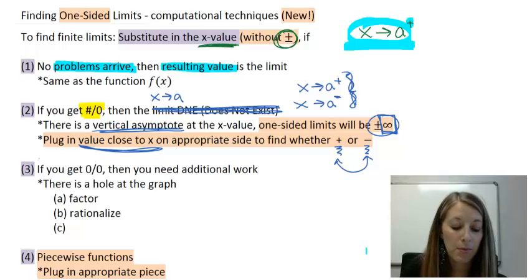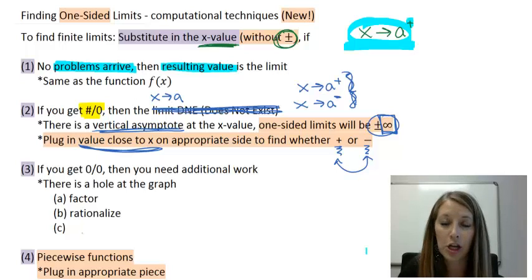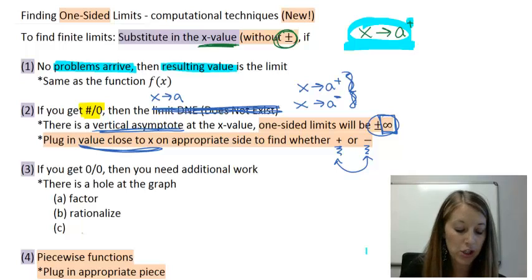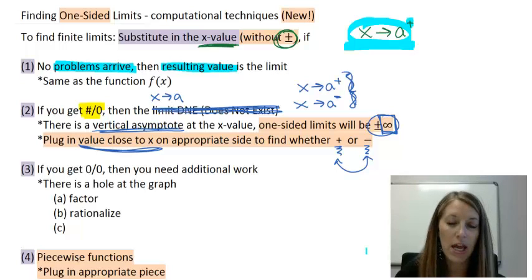In situation number three, notice there's no orange highlighted things there, so nothing changes. And we actually have a last situation. We have a fourth situation, and that comes about if we have a piecewise function. Hopefully, you learned about these in college algebra. If not, I will try and review them again here real quick. And basically, it says we just plug in the appropriate piece. And again, I'll cover that in an example.